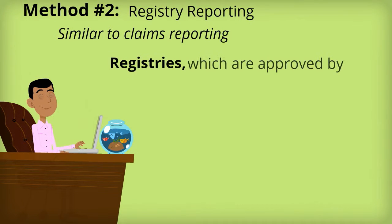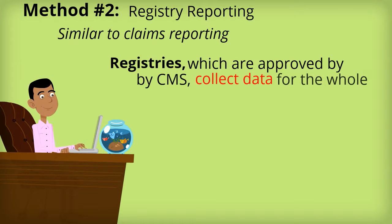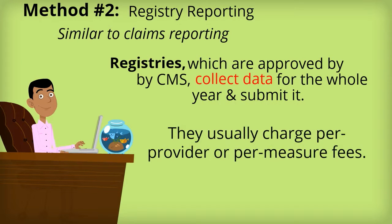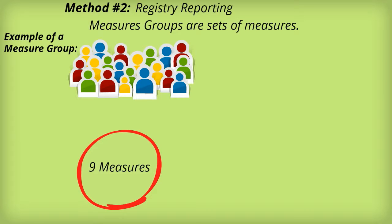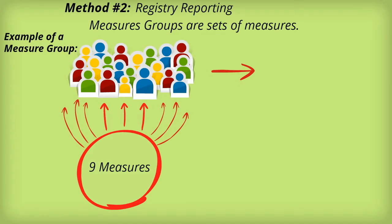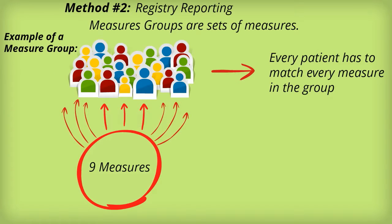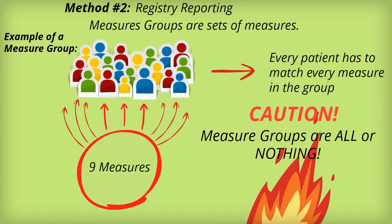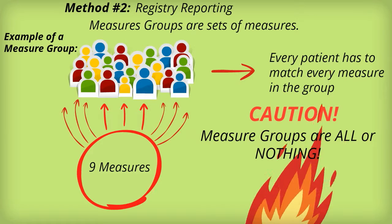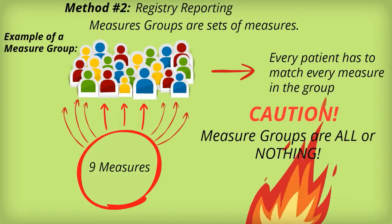Registry reporting is similar to claims reporting in that you need 9 measures. With this method, you hire a third-party company approved by CMS to take the data you've collected over the year and submit it. These usually have per-provider or per-measure fees. Registry reporting has one other form of choosing measures called Measures Groups. Measures Groups are sets of measures, usually 9, and you only need to choose 20 patients, 9 of whom do not need to be Medicare. Be cautious of this method, though, as measures groups are all or nothing — every patient has to match every measure in that group.